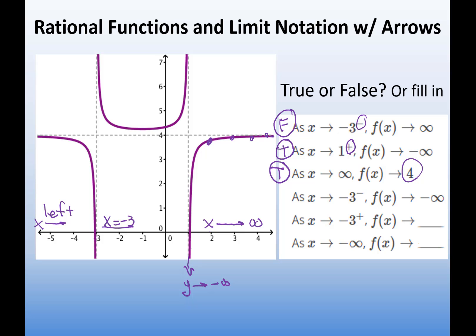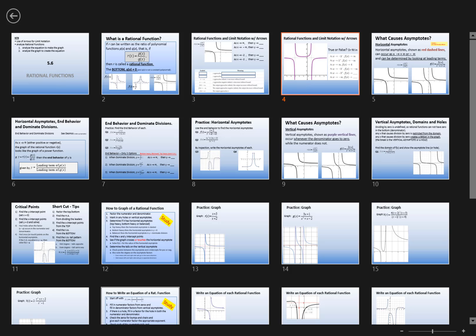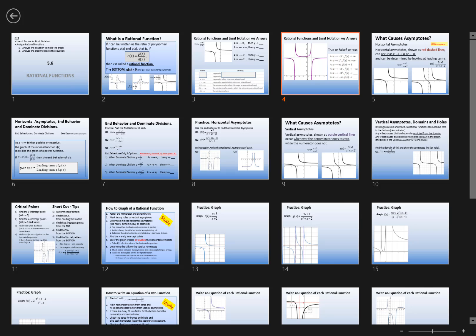So as x approaches negative 3, well, let's say we start at negative 5. Y is up here. When x is negative 4, y is here. When x is negative 3.5, y is here. And the closer my number gets to negative 3, the y numbers keep going down to negative infinity. And so that would make that actually a true statement.